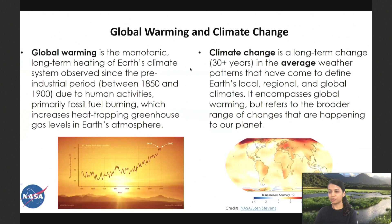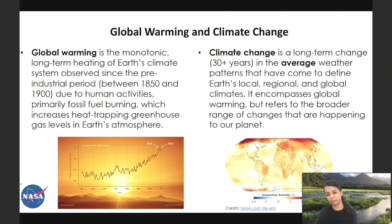The terms global warming and climate change are often used interchangeably but have distinct meanings. Global warming is the long-term heating of Earth's climate system observed since the pre-industrial period between 1850 and 1900, due to human activities — mostly fossil fuel burning — which increases heat-trapping greenhouse gas levels in the atmosphere. Climate change is a long-term change in the average weather patterns that define our local, regional, and global climates, referring to the broader range of changes happening to our planet.